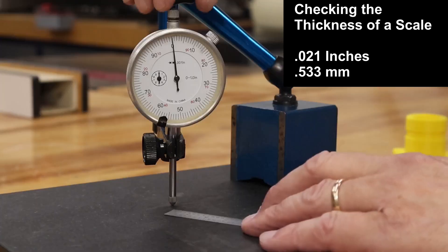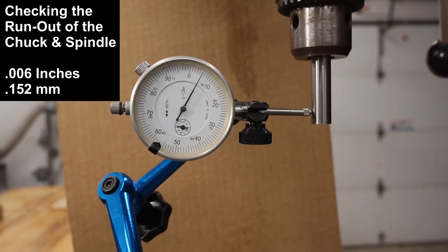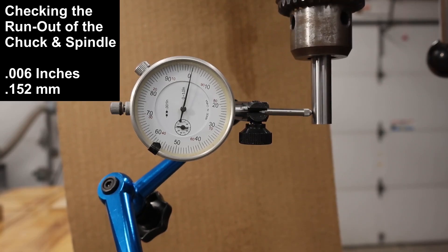Dial indicators are used to measure a variety of attributes or features. Some of these features include distances, thicknesses, flatness, diameters, etc. They can make static measurements as well as dynamic measurements such as mechanical devices that move.